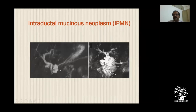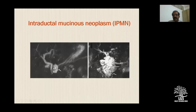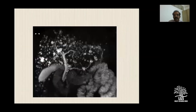Intraductal papillary mucinous neoplasms contain a lot of fluid so they appear very bright on T2-weighted sequences. The typically called cluster-of-grapes appearance is seen on regular T2 images. MRCP has good specificity for diagnosing intraductal mucinous neoplasms.